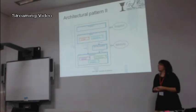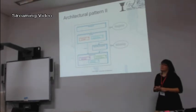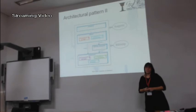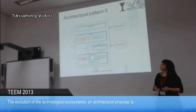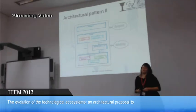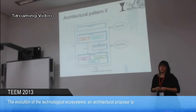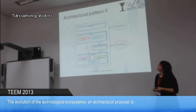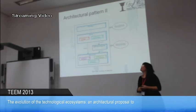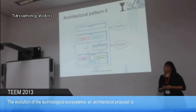The third layer is the service layer, and this layer contains all the components that provide the solution to the users. There are two components that would be present in all ecosystems: a decision-making component to improve the evolution of the ecosystem and control the information flows, and the connection to Web 2.0 tools. The last layer, the presentation layer, provides a visual integration to the user.